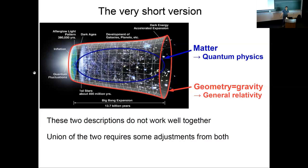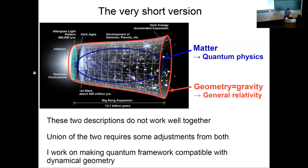The two fundamental descriptions of different parts of this picture don't actually work very well together. That is the longstanding problem to which I'm referring, the problem of quantum gravity. The union of the two requires some adjustment from both, requires a different way of doing quantum mechanics and definitely a different way of doing gravity.